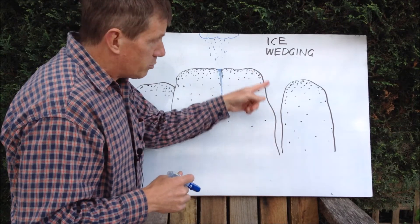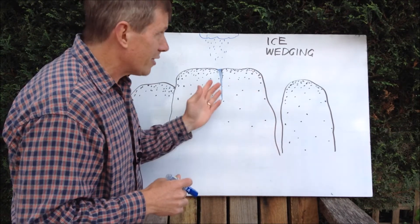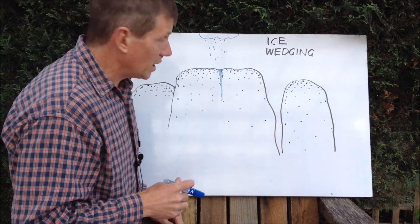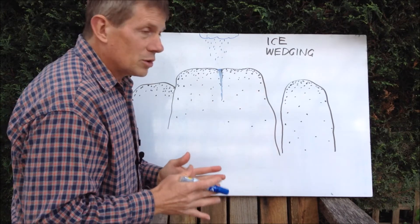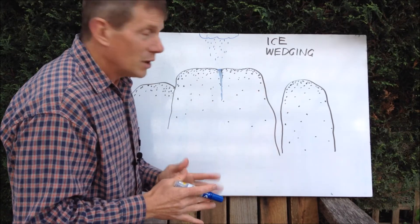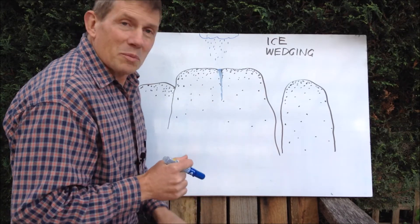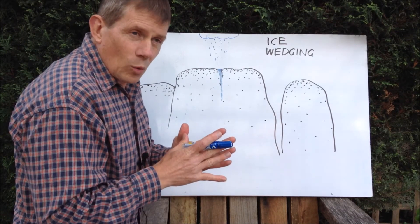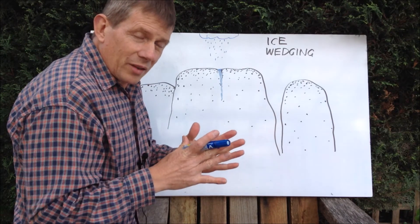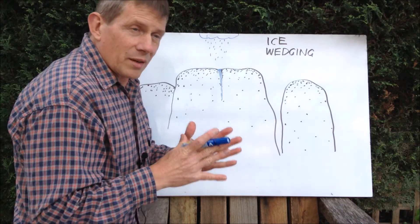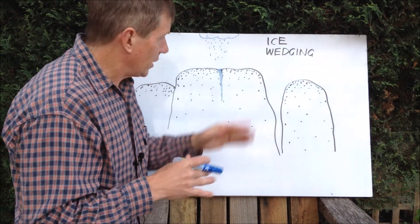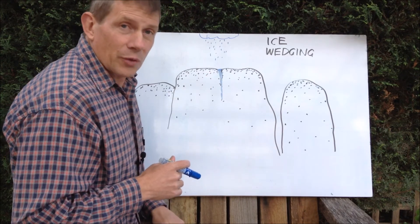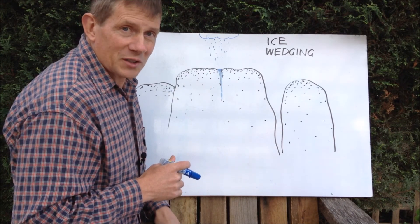That split between those two rocks may have been caused by ice wedging a long time ago. So that's one practical example where the fact that water expands when it freezes has a big effect on the weathering of some rocks.